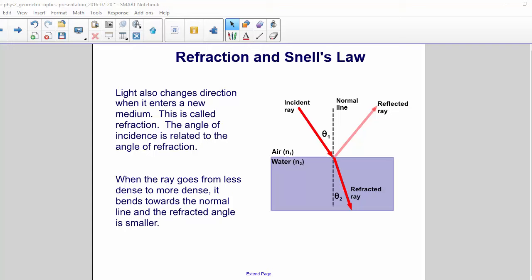When the ray goes from less dense to more dense, it bends towards the normal line, and the refracted angle is smaller.